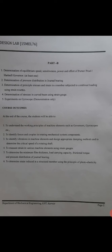In Part B, we have: determination of equilibrium speed, sensitiveness, and power effort of a Porter or Hartnell governor — any one of them. Determination of pressure distribution in journal bearings. Determination of principal stress and strain in a member subjected to loading using strain gauge rosettes. And determination of stresses in a curved beam using strain gauges.